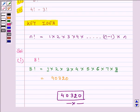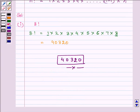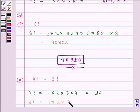In the second part, we need to find 4 factorial minus 3 factorial. First, 4 factorial is the product of all natural numbers from 1 to 4, which equals 24. Then, 3 factorial is 1 multiplied by 2 multiplied by 3, which equals 6.